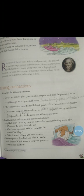Question number two: read these lines and answer the questions that follow. 'In big black letters I write my name on them and the name of the village where I live.' What does the word 'them' refer to? Here 'them' refers to his paper boats. Why does the persona write his name and the name of his village on them? He writes his name and village name so that when the boat moves far away in the running stream, people should know his name and where he lives. This tells us that he wants to be famous and popular among people.